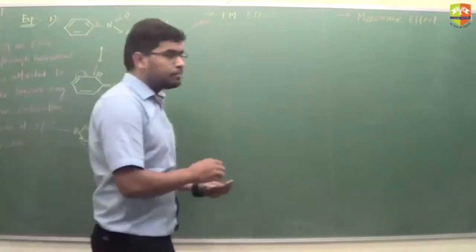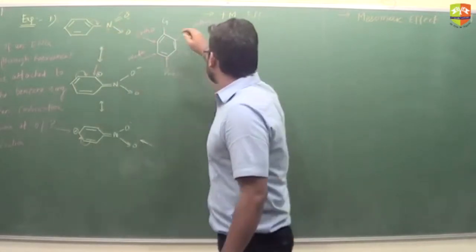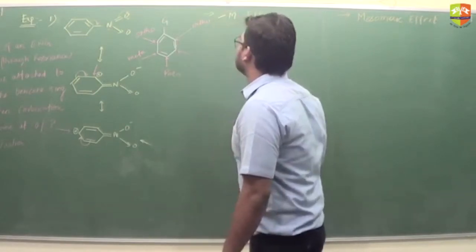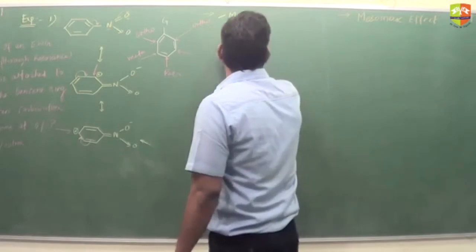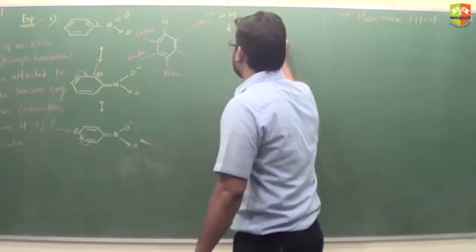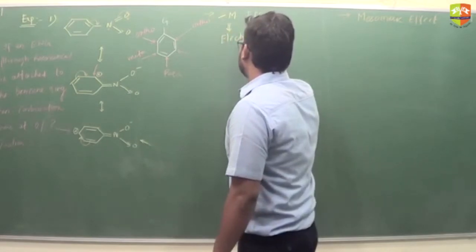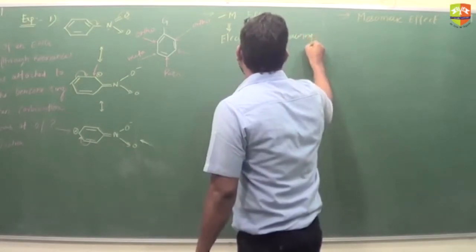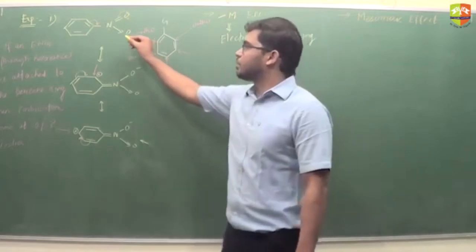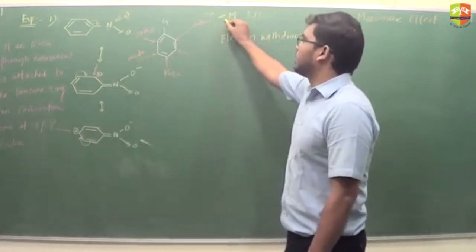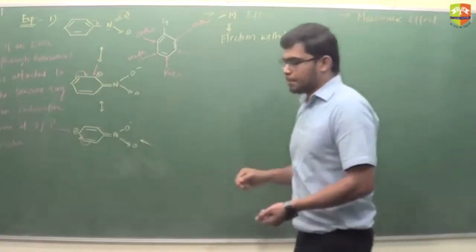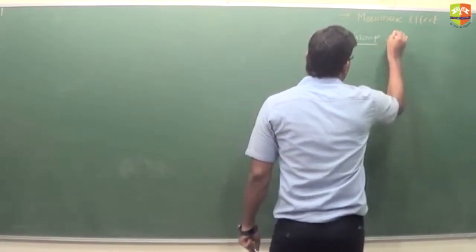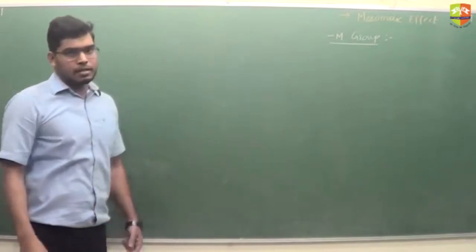One correction: I mistakenly wrote plus M in the previous example. Plus M groups are electron-releasing. The example with NO₂ is an electron-withdrawing group, so it shows minus M effect. Minus M effect is the electron-withdrawing effect. You should know which groups show minus M and which show plus M. The logic is: multiple bond between first and second atom with the second atom more electronegative than the first, OR the first atom has a vacant P orbital — both cases show minus M effect.